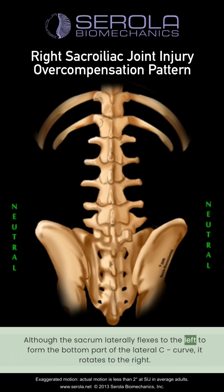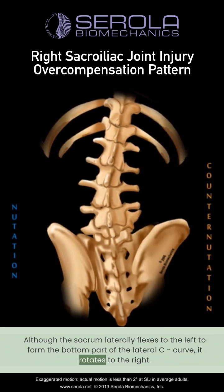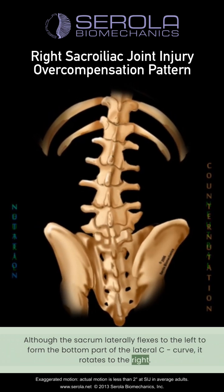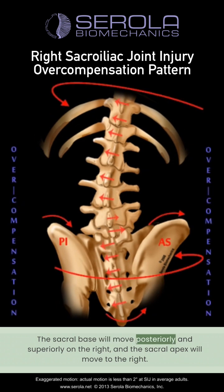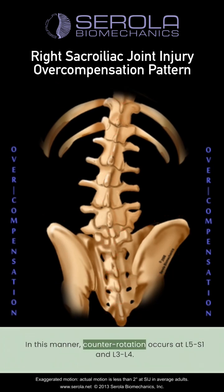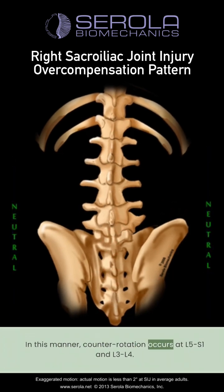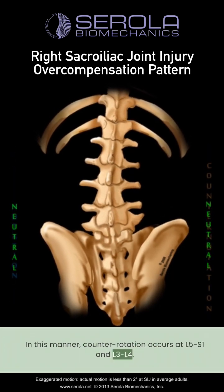Although the sacrum laterally flexes to the left to form the bottom part of the lateral C curve, it rotates to the right. The sacral base will move posteriorly and superiorly on the right, and the sacral apex will move to the right. In this manner, counter rotation occurs at L5-S1 and L3-L4.